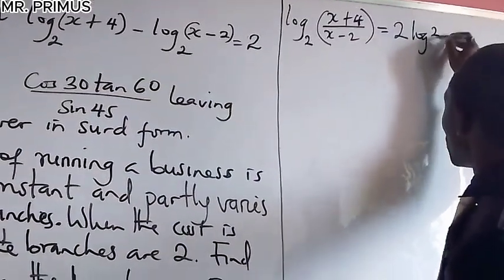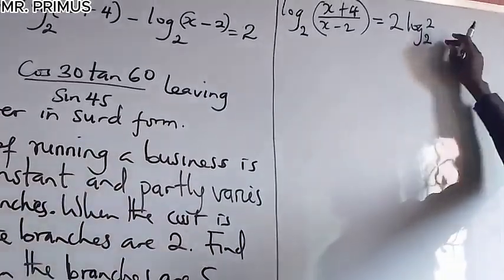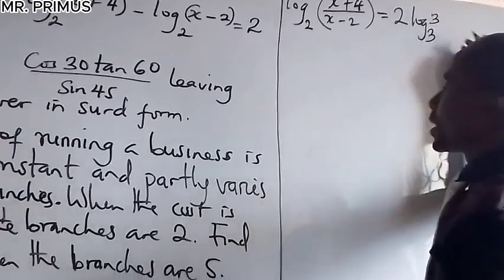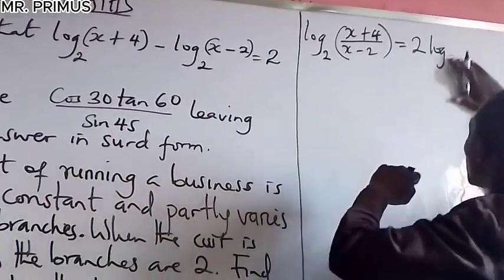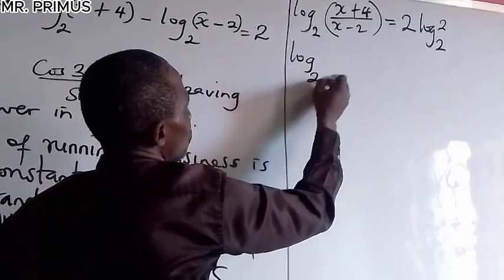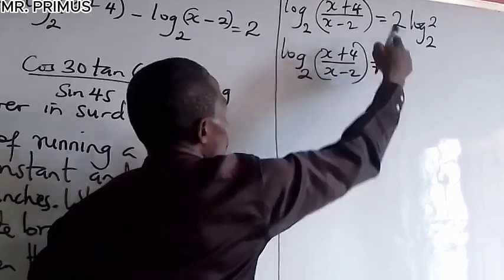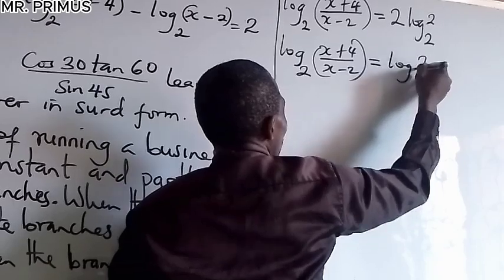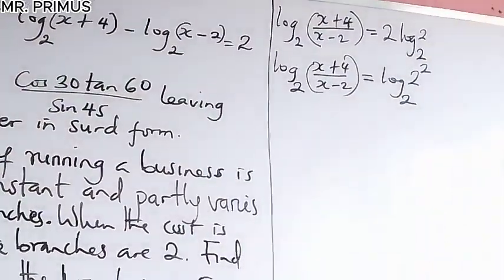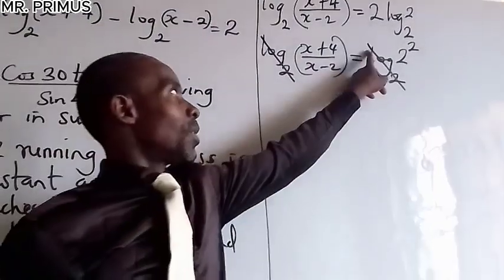Now, because the base is 2, we write the right-hand side as log base 2 of 2 squared, since log base 2 of 2 equals 1. So 2 on the right becomes log base 2 of 2 squared. That way, log base 2 cancels on both sides — there's no plus or minus to interfere — leaving us with the argument equal to the argument.